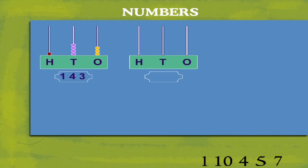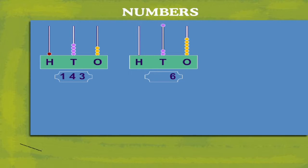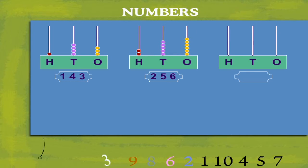Here is another one. One, two, three, four, five, six ones. One, two, three, four, five tenths. And two hundredths is two hundred and fifty six.